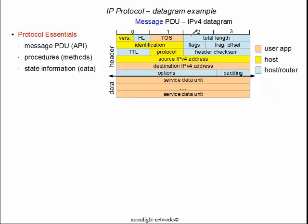The header length is the length of this entire header field. It's kept separate and distinct from the length of the entire packet because the header needs to be processed by each router along the way, but the service data unit does not need to be examined by routers. The header length is only four bits, but it is specified in 32-bit words. So these four octets constitute a 32-bit word, and in this simple example we'd count six 32-bit words to determine the header length.